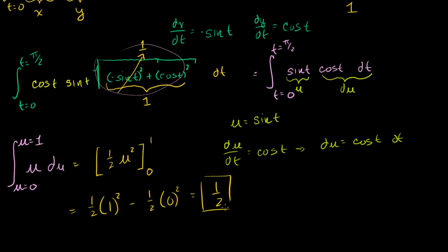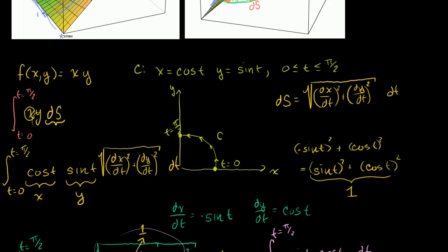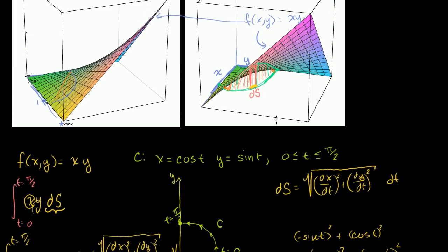So we did all that work and got a nice simple answer. The area of this curtain — we just performed a line integral — along this curve is 1/2. If this was in centimeters, it would be 1/2 centimeters squared. I think that was a pretty neat application of the line integral.